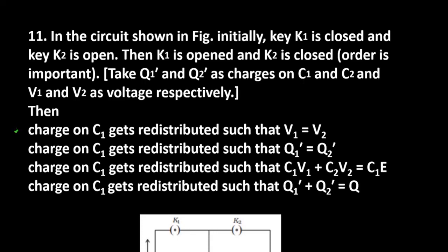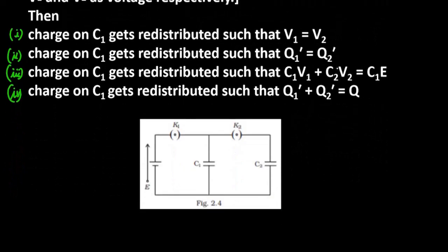These are four options. Out of these, there might be a condition that we have two correct points, and it can be more than that. Now first of all, let's see where this condition applies. We have said key K1 is closed and K2 is open.